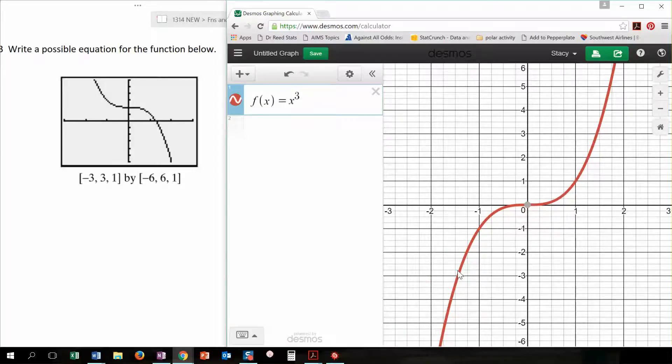Because the parent function... look over here in Desmos. The parent function starts down here in the third quadrant, or down here on the left. And I want it to be up here on the top of the left. So that is a reflection across the x-axis. And so when I reflect across the x-axis, I just simply put a negative in front.